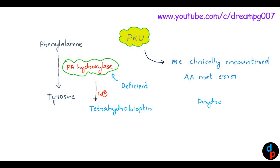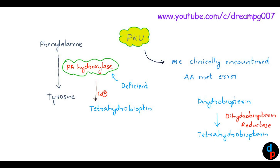Tetrahydrobiopterin is formed from dihydrobiopterin. Dihydrobiopterin is converted to tetrahydrobiopterin with the help of an enzyme called dihydrobiopterin reductase. So when these two enzymes are deficient — that is, phenylalanine hydroxylase and dihydrobiopterin reductase — it leads to accumulation of phenylalanine in the human body, which in turn leads to phenylketonuria.